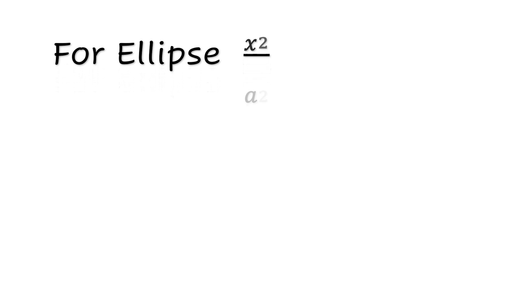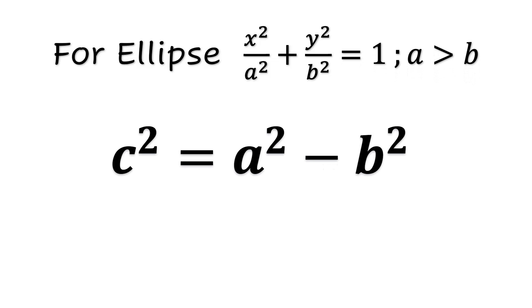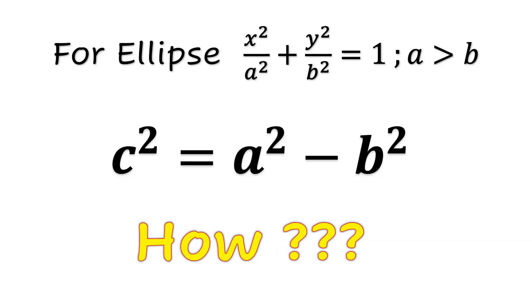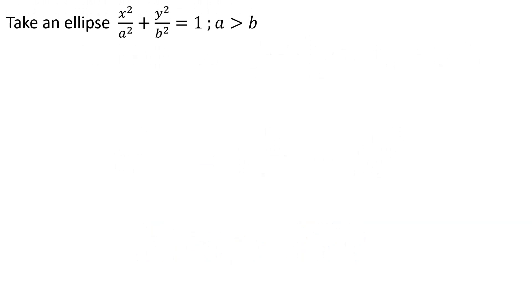For the ellipse x² / a² + y² / b² = 1 with a greater than b, c² = a² - b². But how? That's what we are going to investigate in this video. We take the ellipse x² / a² + y² / b² = 1 where a is greater than b.